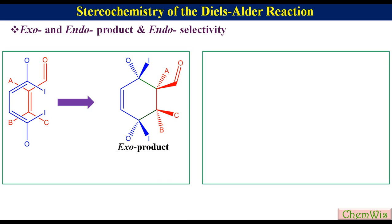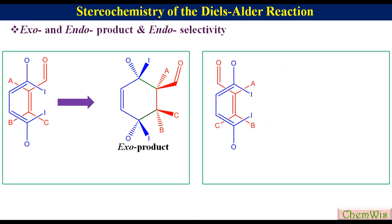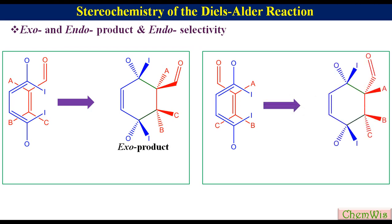The other way of orientation of the dienophile is where the electron-withdrawing group is directing towards the developing double bond. This is another diastereomer in which the outer group and the pi-bond-containing group, which is CHO, are cis to each other. This is called the endo-product.